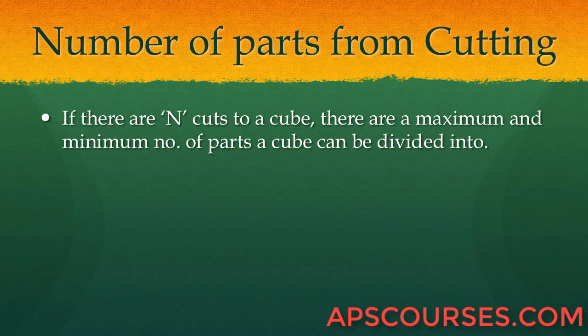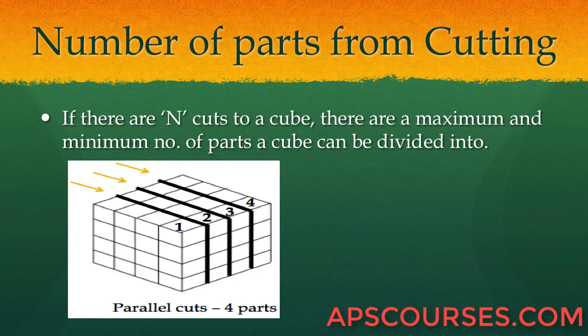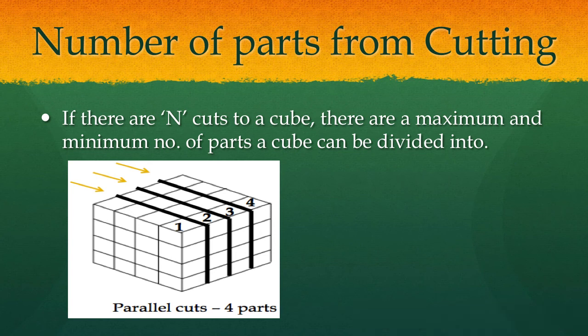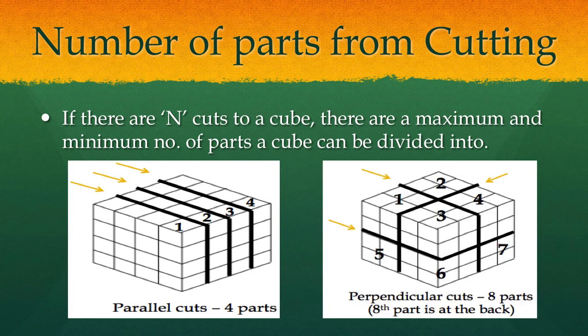If there are n cuts to a cube, there are a maximum and minimum number of parts that the cube can be divided into. If you cut the cube in parallel cuts — suppose you have 3 cuts — the cube is divided into 4 parts. But if the cuts are perpendicular, in the x, y, and z directions, then 3 cuts make 8 parts.